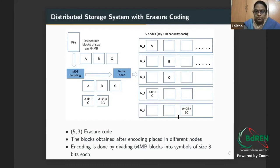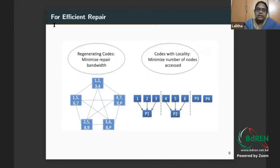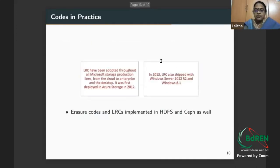There have been two classes of codes recently which wanted efficient repair properties. Repair is orthogonal to storage overhead. One was regenerating codes from a group in Berkeley, and codes with locality from Microsoft Research. Efficient repair is accomplished by minimizing the repair bandwidth in one case, by minimizing the number of nodes accessed in another. These came around 2010. There's been a lot of research constructing these codes and proving properties in the last eight years or more.